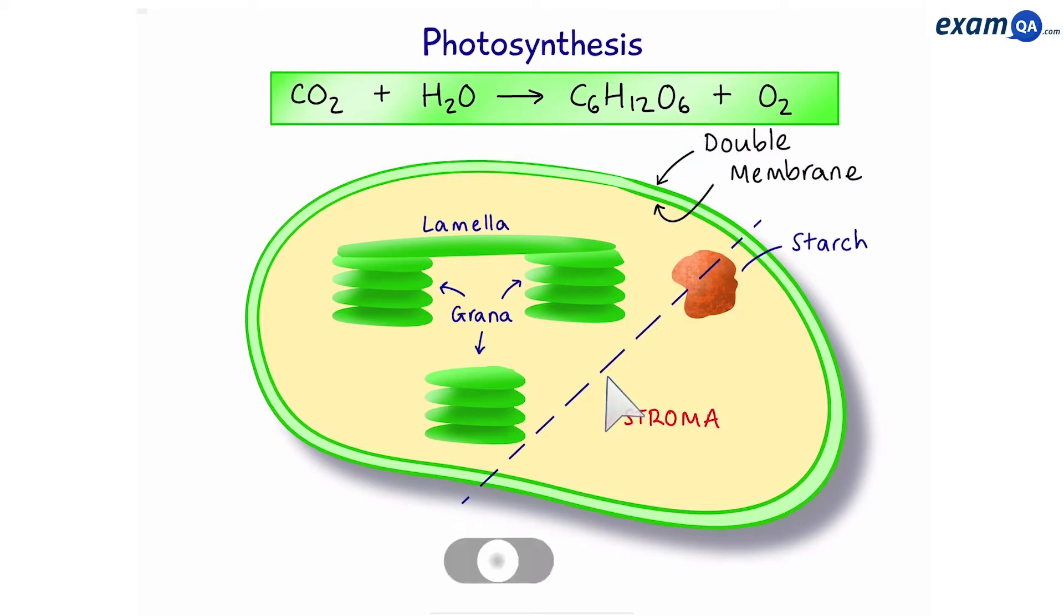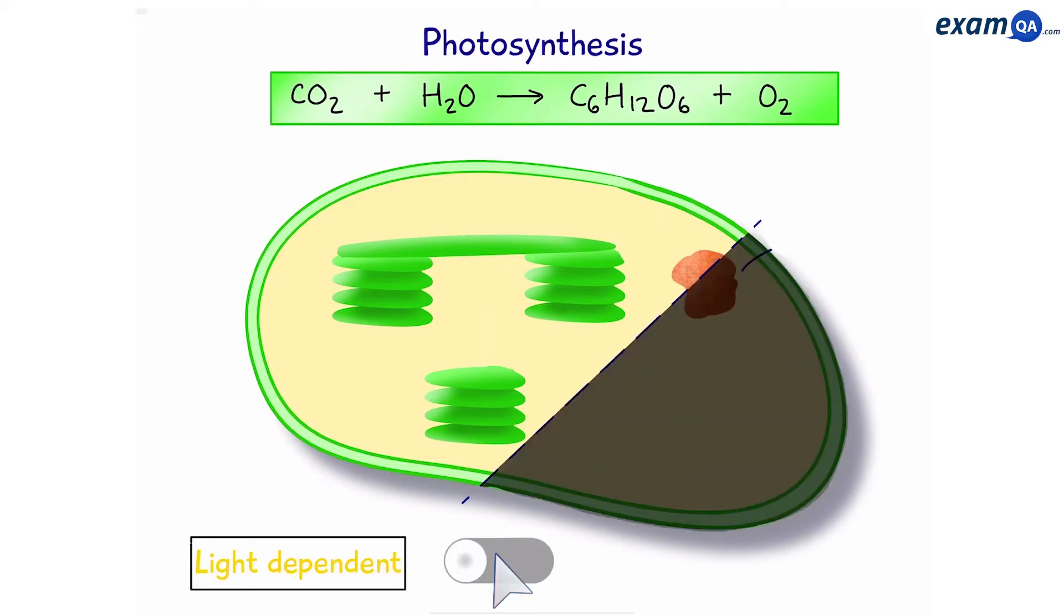So, let's move this little guy to the left. The first stage is known as the light-dependent stage. It happens in the thylakoid membranes. Water comes in and with the help of sunlight, oxygen is produced. And we also create ATP and NADPH.